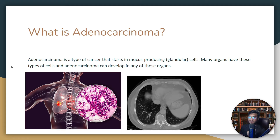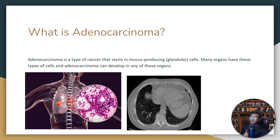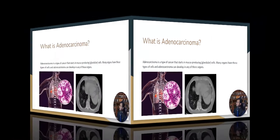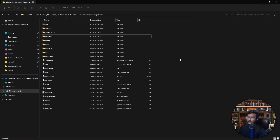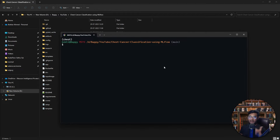To address this problem statement, we've built one solution. First I'll show you the project demo — how it's working and how it classifies these kinds of cancer — then I'll start with the actual implementation. I've already created the project, so let me open it. This is the entire project I've already implemented. Let me show you the demo first, then I'll show how I implemented all the components.